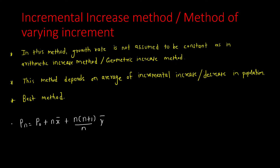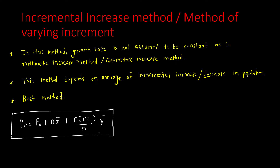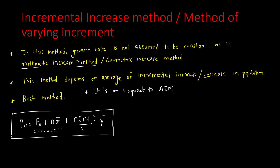You can see that this formula is an upgrade to the Arithmetic Increase Method — it has more terms. The Arithmetic Increase Method term is n·x̄, and the additional term here is n(n+1)/2 · ȳ.